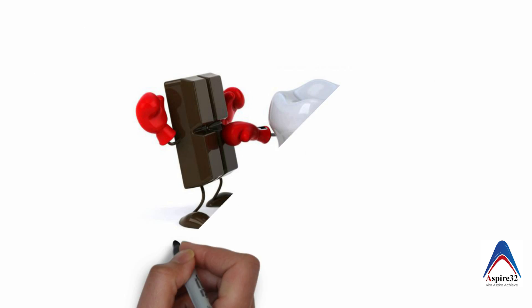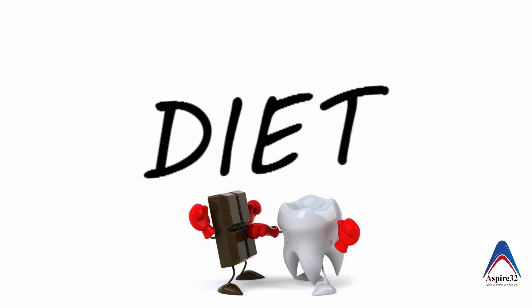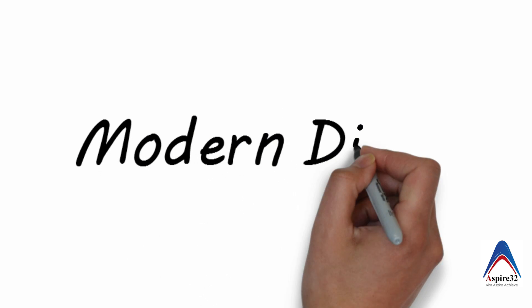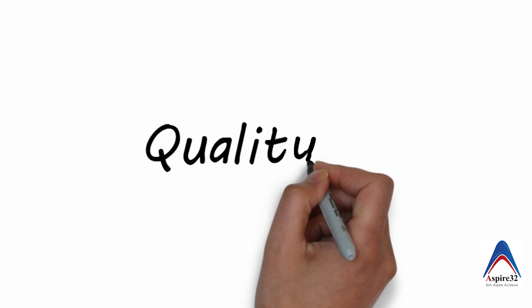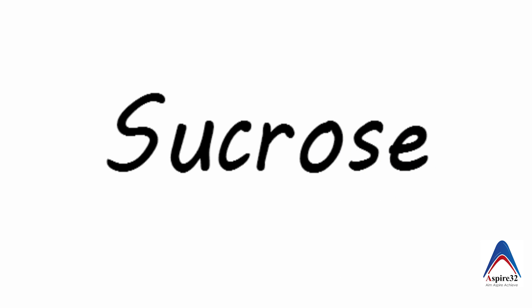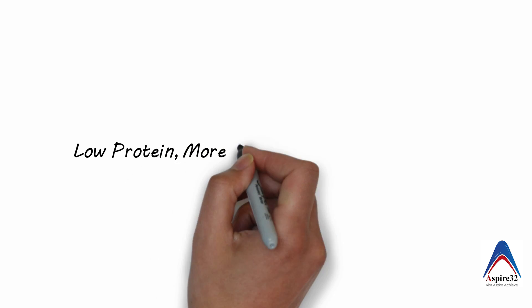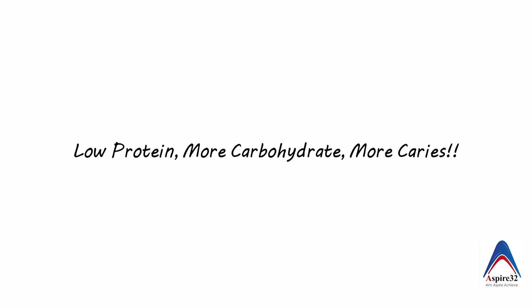Now let us understand the role of diet in the initiation of dental caries. Modern diet is the third major factor in the development of dental caries. Compared to primitive diets, there are several detrimental changes. Physically, the diet is less fibrous, more refined, soft, and sticky, which favors stagnation of food on the tooth surface. Chemically, the diet is mainly composed of carbohydrates, which are cariogenic. Modern diet contains more refined carbohydrates like sucrose, fructose, and glucose. A diet rich in refined carbohydrates and low in proteins predisposes to the growth of cariogenic organisms.